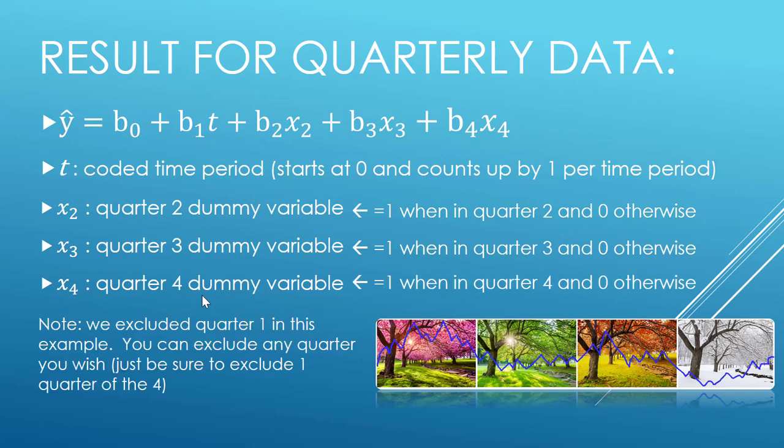Note that I excluded quarter one. You can exclude any quarter that you'd like. We need the t variable somewhere. These b0 through b4 are what are called our coefficients. If I excluded quarter one, then my coefficient number would match with my dummy variable, so quarter two, three, and four go with the b2, b3, b4, and the b1 goes with my coded time period.